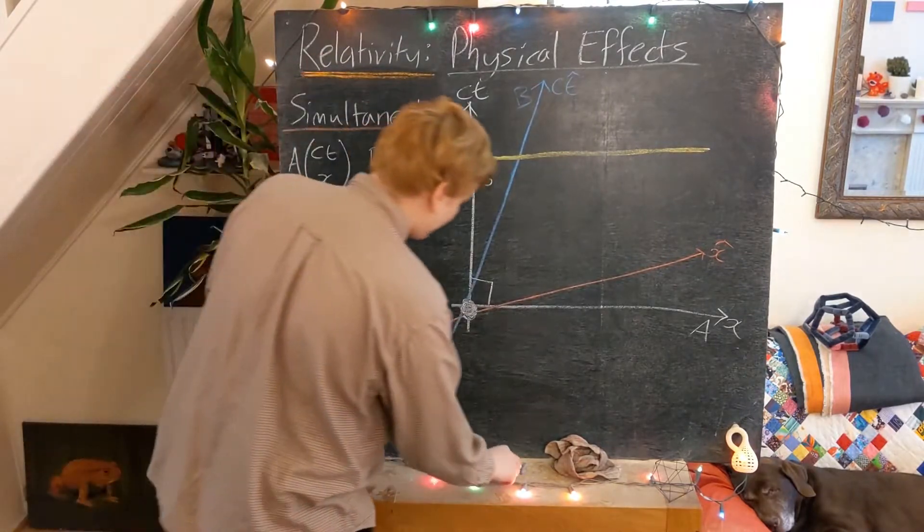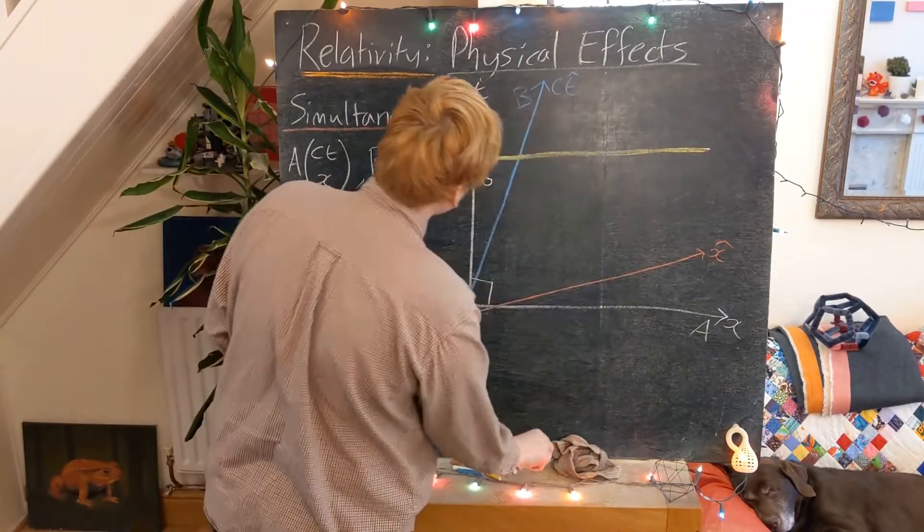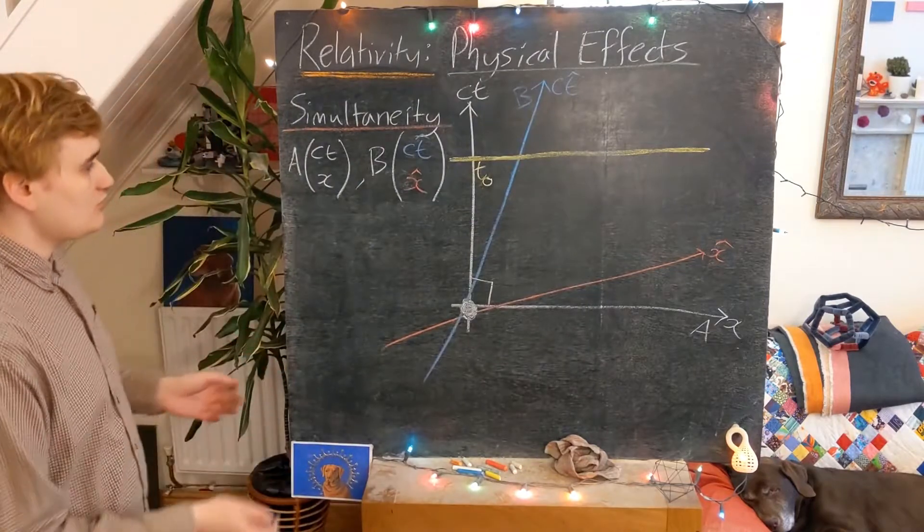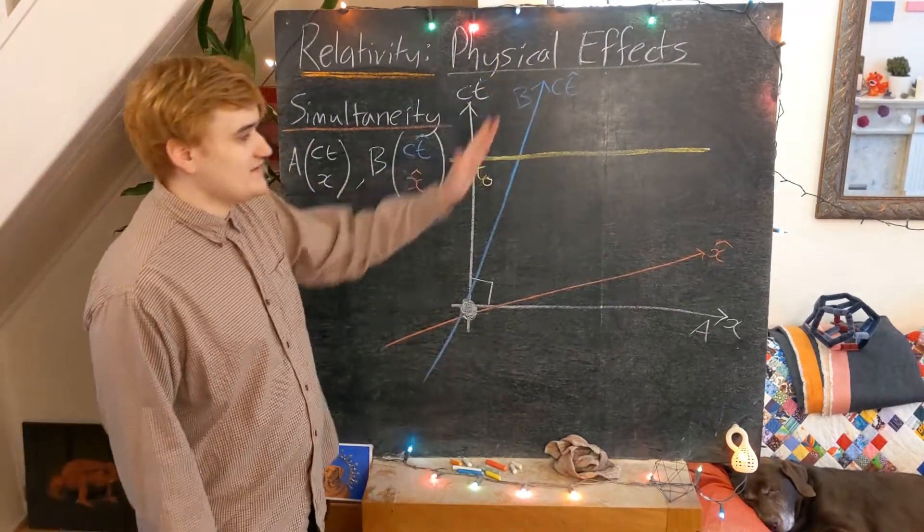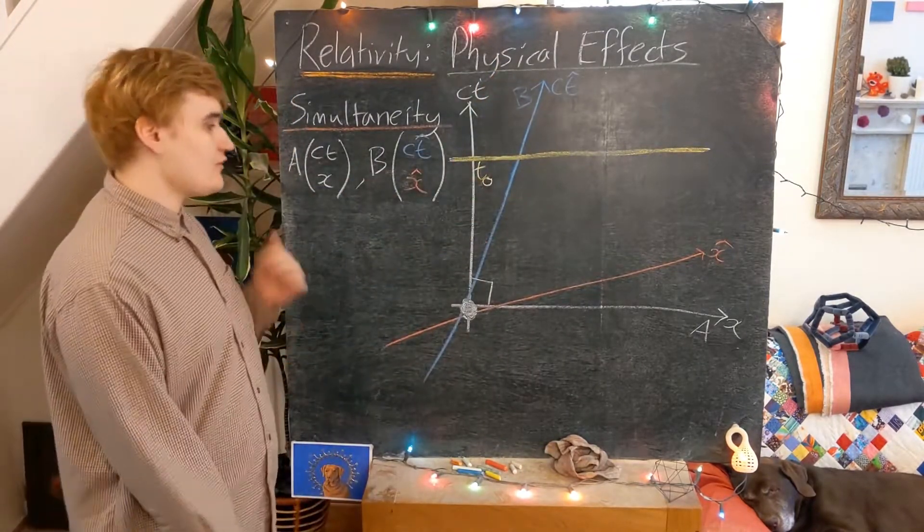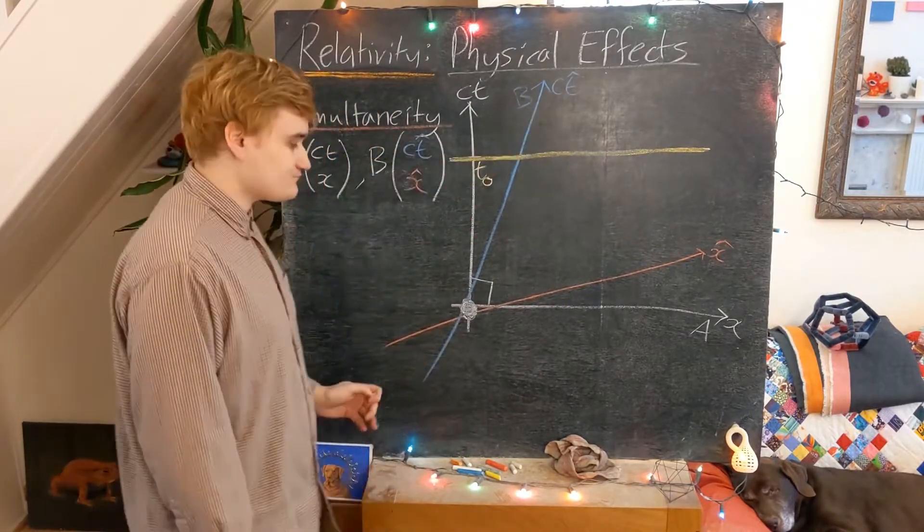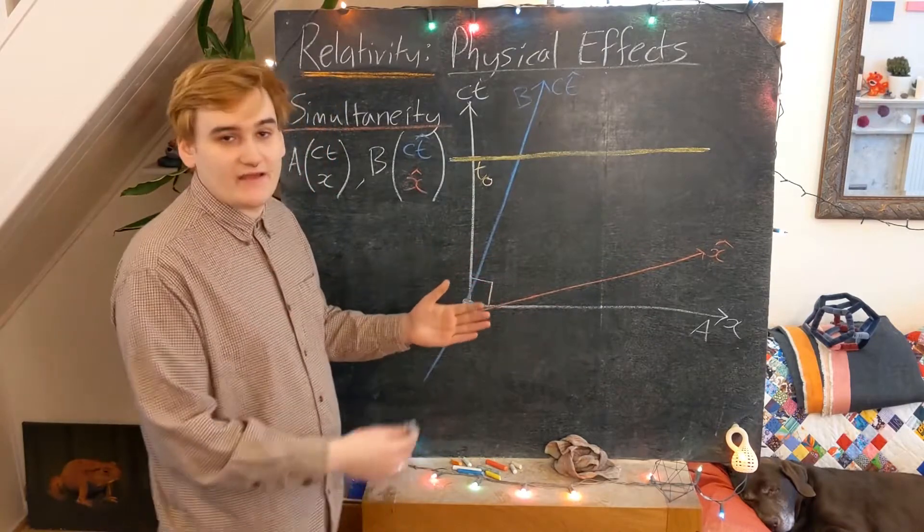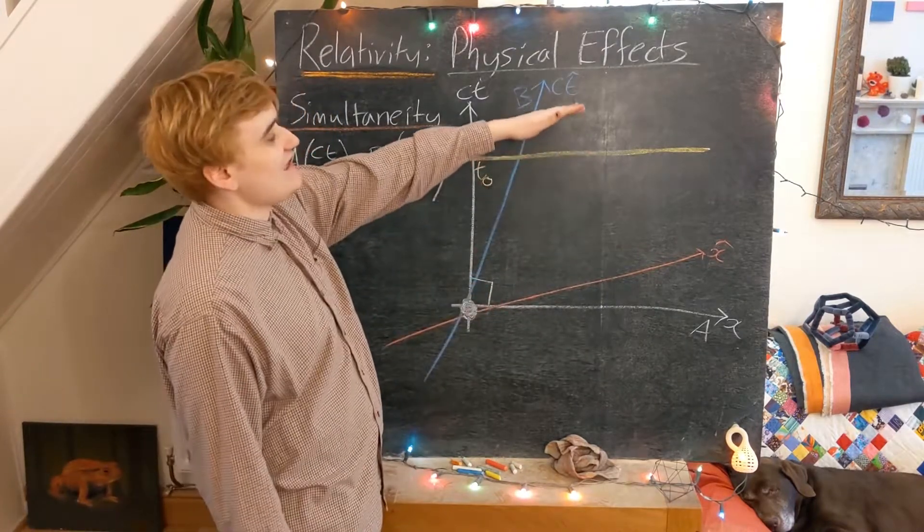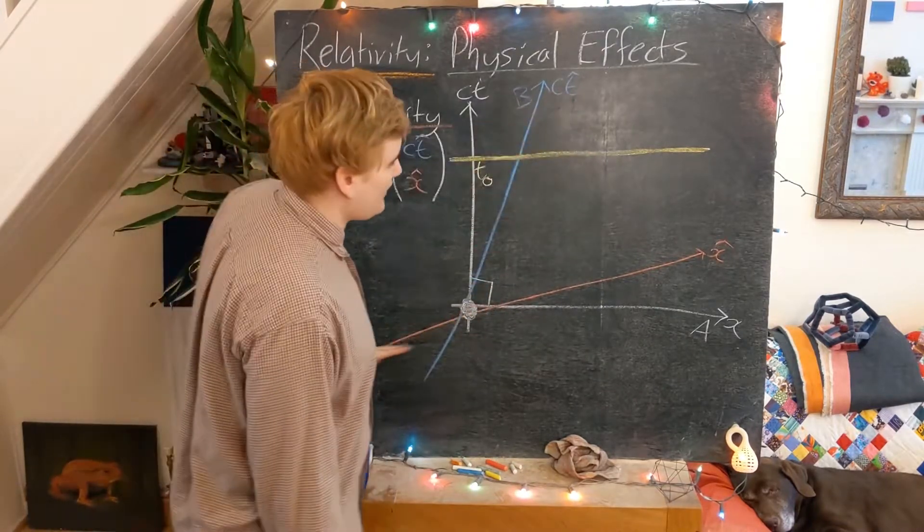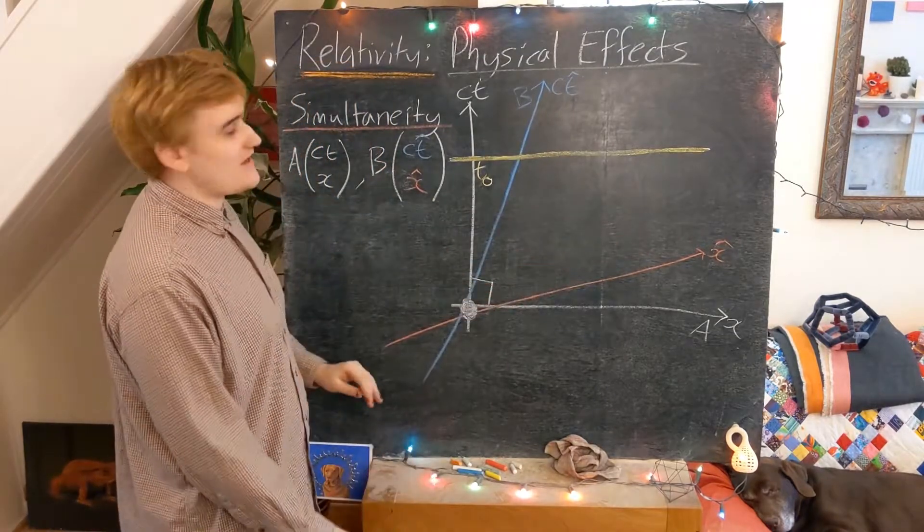But now, how is this going to change in the B frame? Well, first of all, we know that in the B frame these axes are no longer orthogonal. And so what we have to realize is that a line which is specifying a line of constant T-hat is now going to be a line which is parallel to our x-axis.